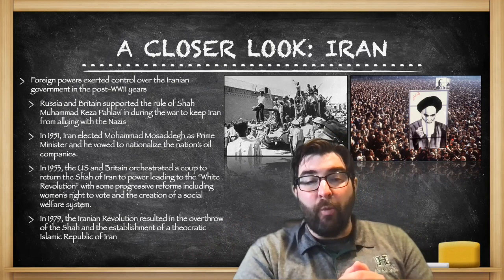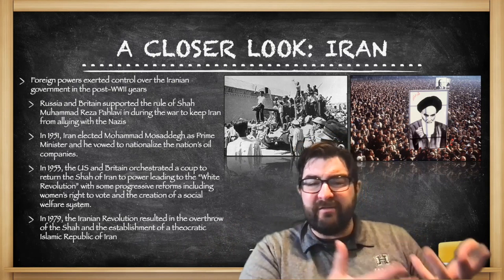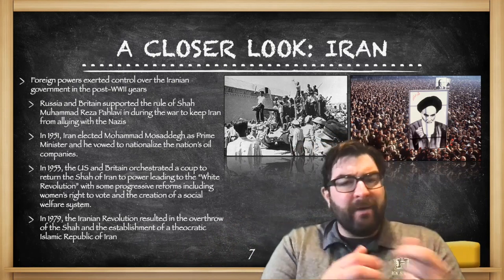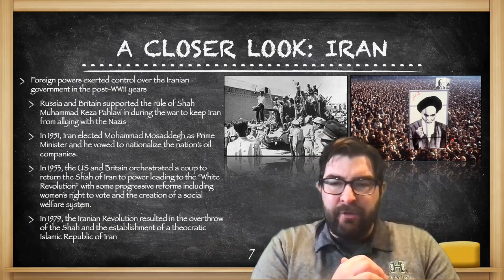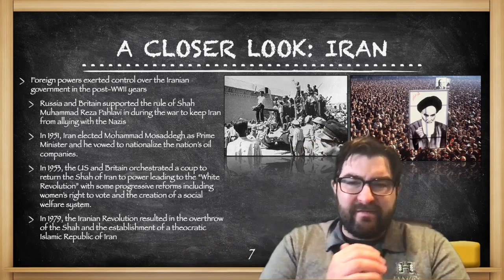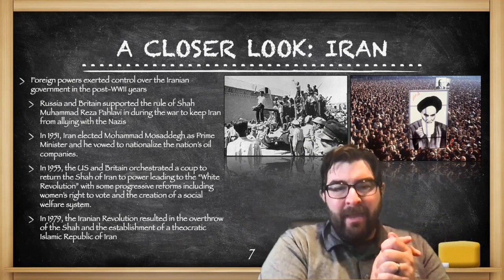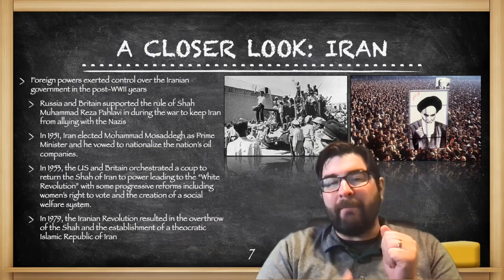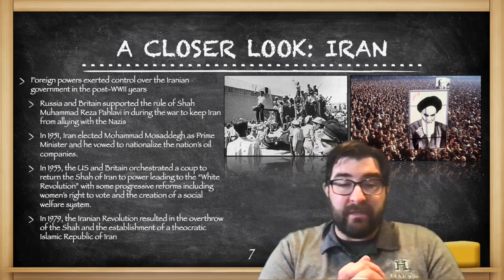This led to what was known as the White Revolution, where some progressive reforms were instituted, including women's right to vote and the creation of a social welfare system. But ultimately, a movement grew in Iran — largely because of repressive government policies against the people — that led to a revolution in 1979. This Iranian revolution overthrew the Shah of Iran and established a theocratic government, what we call today the Islamic Republic of Iran.